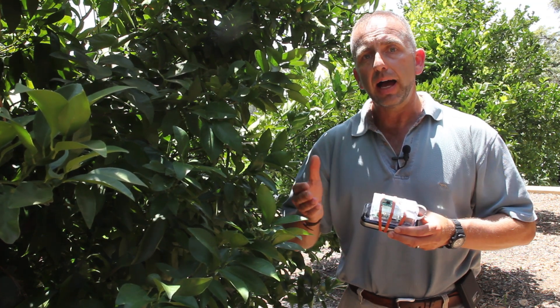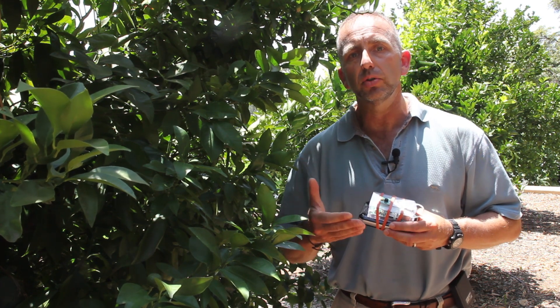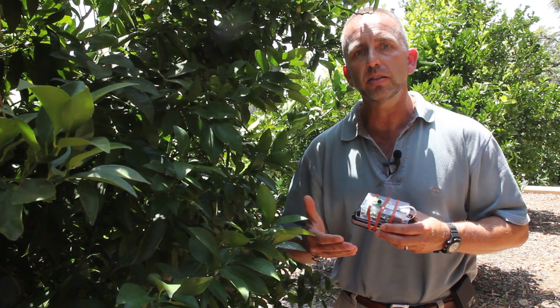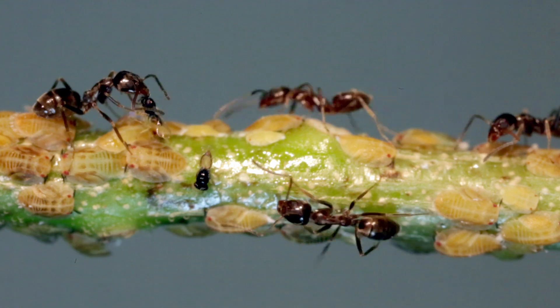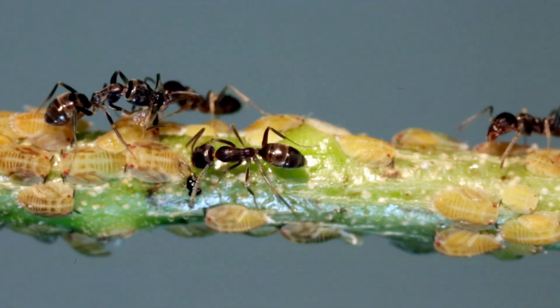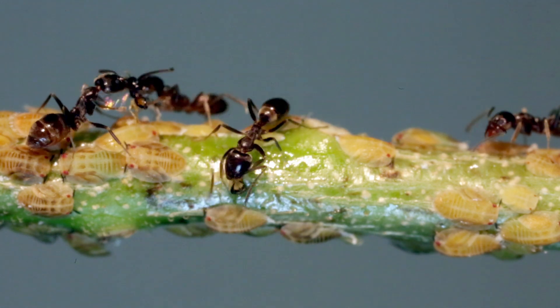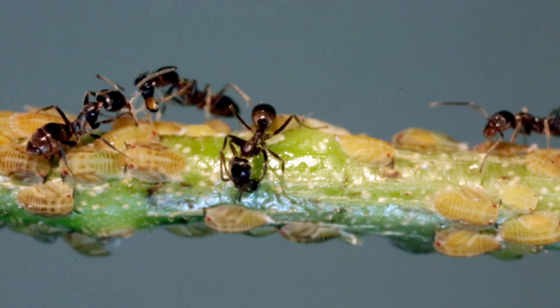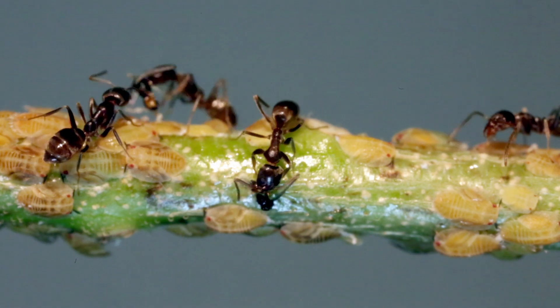Ants guard colonies of Asian citrus psyllid because they produce honeydew, which is a sugary waste product. Because ants are guarding these colonies of Asian citrus psyllid, they greatly limit access to these colonies by natural enemies, such as parasitic wasps that we have imported from Pakistan.